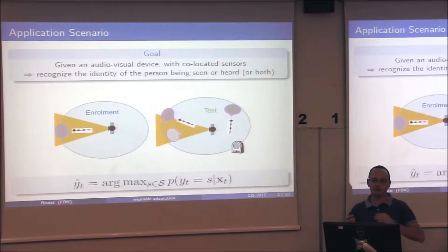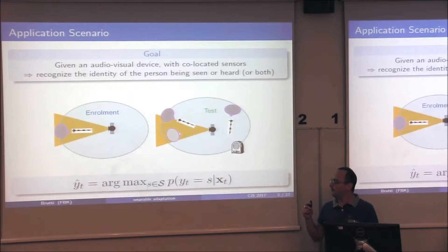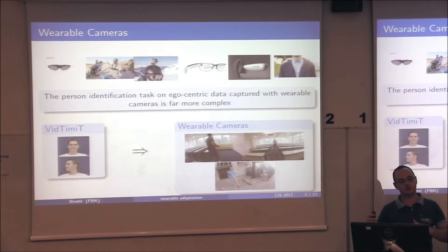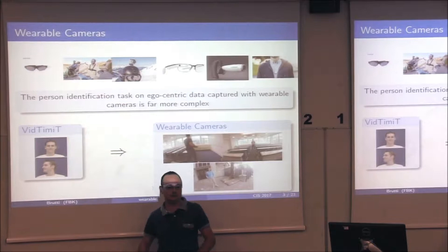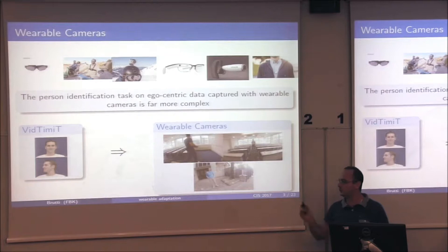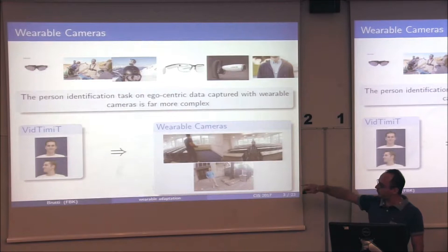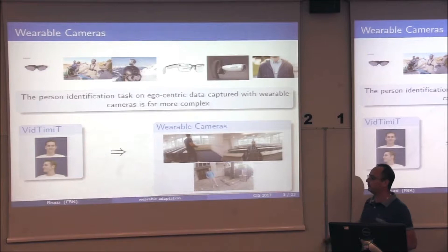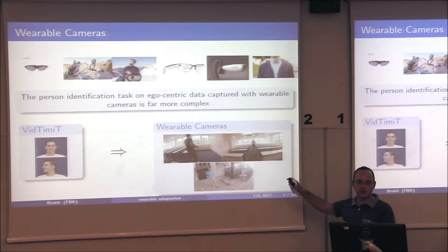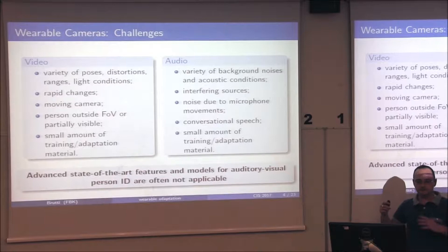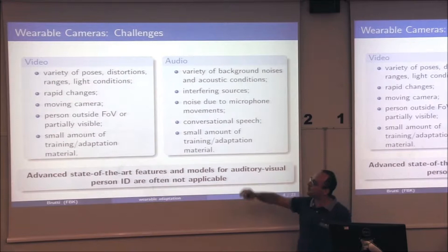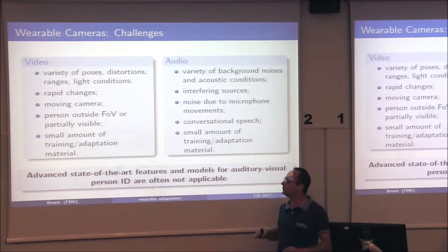This is the traditional person identification task, sitting somewhere between speaker verification — common in audio processing — and personal identification, more typical of the image processing community. When we move to wearable cameras, the person identification task is far more complex. I reported two samples from the VideosTeam-it dataset and data we collected using a GoPro camera. The conditions are particularly more difficult — we go from constrained to basically unconstrained scenarios.